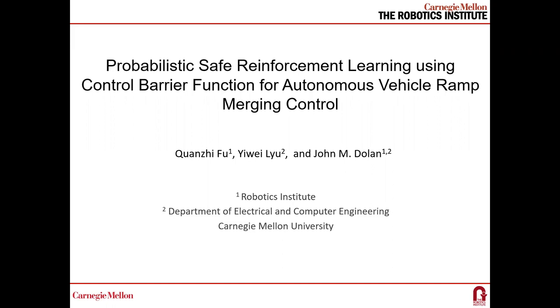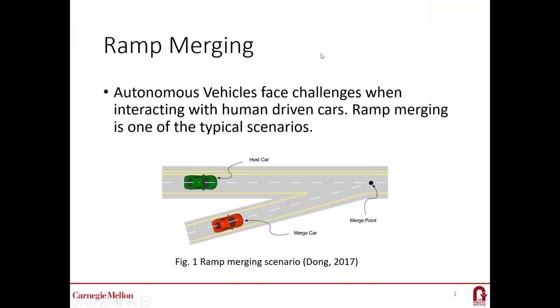First, let me introduce the ramp merging problem. Ramp merging is a scenario where the vehicles from the mainline need to merge with the vehicles from the ramp. This task is quite difficult for autonomous driving algorithms due to the intensive interaction with human-driven cars. Human-driven cars are hard to predict as different people have different driving styles.